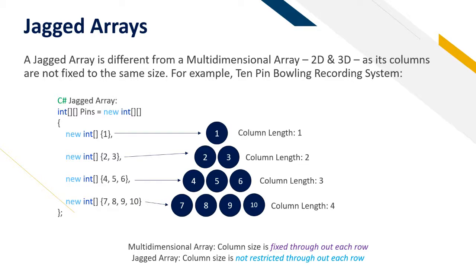For each row the first one has only one column length because that's the first pin. The second row has a column length of two. This holds the second and the third pin. The third row contains three pins so that has a column length of three and that holds the fourth, the fifth and the sixth pin. And the last row contains the last four pins which are the seventh, the eighth, the ninth and the tenth pin which has a column length of four.